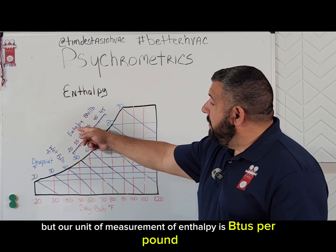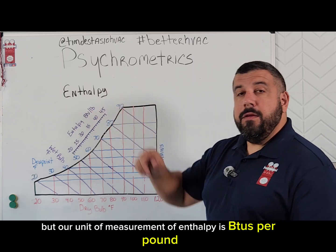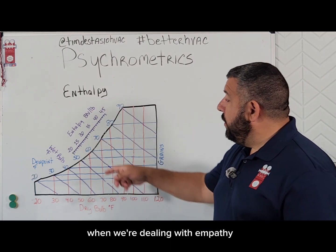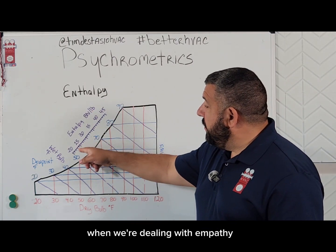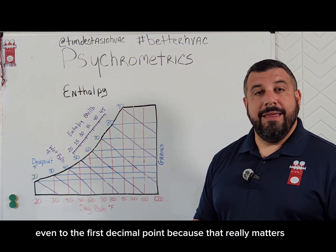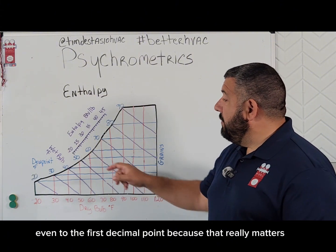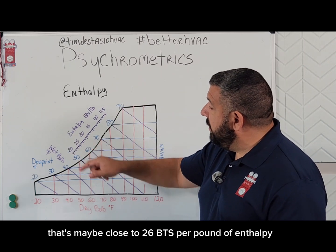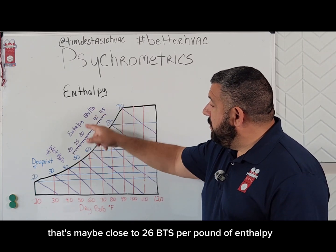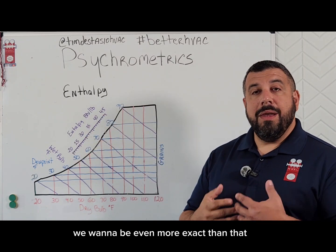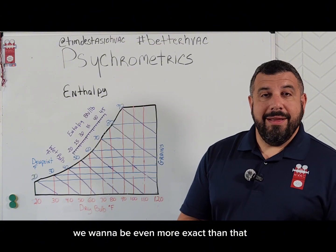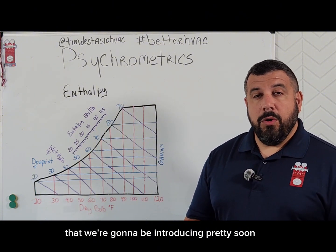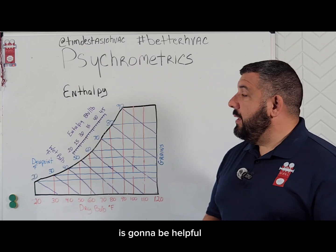Our unit of measurement of enthalpy is BTUs per pound. Now what's really important is to be as exact as possible when we're dealing with enthalpy, even to the first decimal point, because that really matters. So it would not be enough to say that's maybe close to 26 BTUs per pound of enthalpy — we want to be even more exact than that. And that's where a digital psychrometric chart that we're going to be introducing pretty soon is going to be helpful.